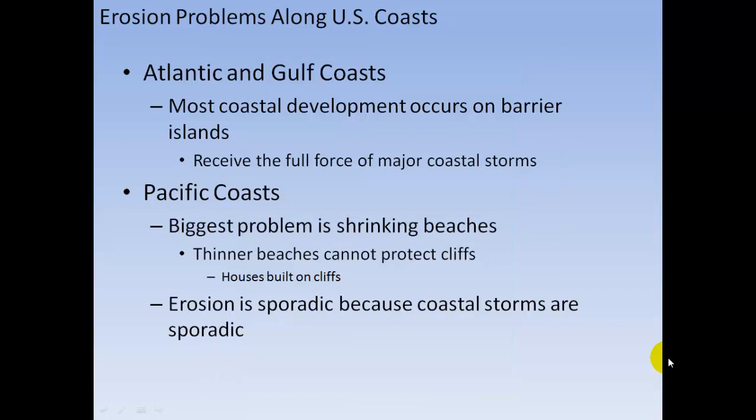Most coastal development along the Gulf Coast occurs on barrier islands, which see the full force of major coastal storms. Instead of letting barrier islands protect the mainland from hurricanes, people built on the barrier islands without fully understanding their protective role. On the Pacific Coast, the biggest problem is shrinking beaches — thinner beaches cannot protect cliffs, and houses built on cliffs are undercut by waves, causing rockfall. Erosion is sporadic because coastal storms are sporadic.